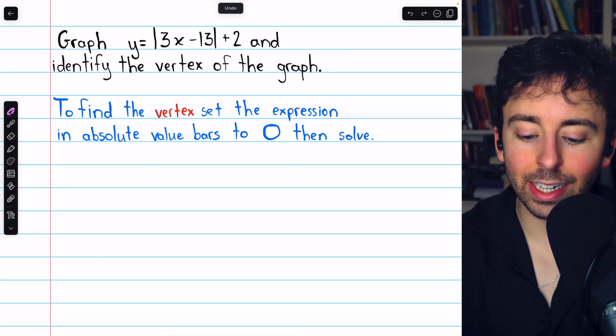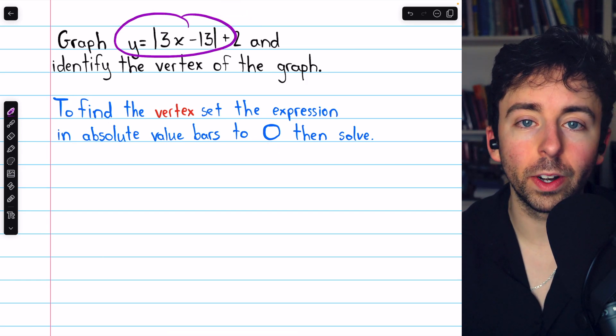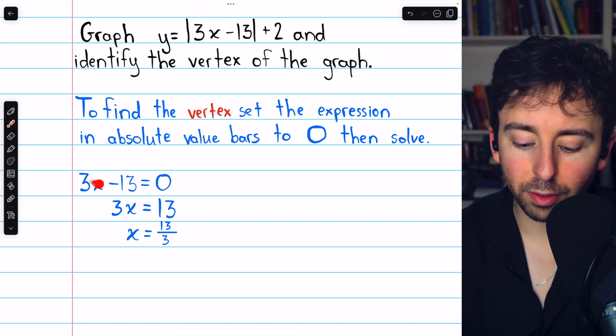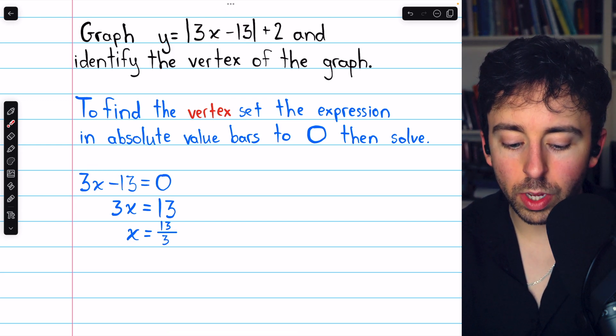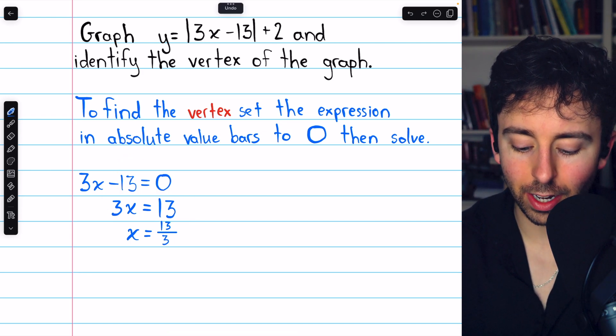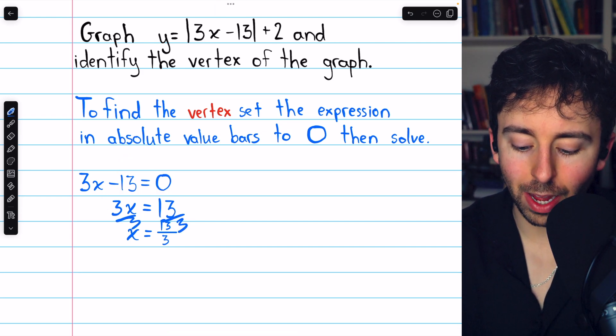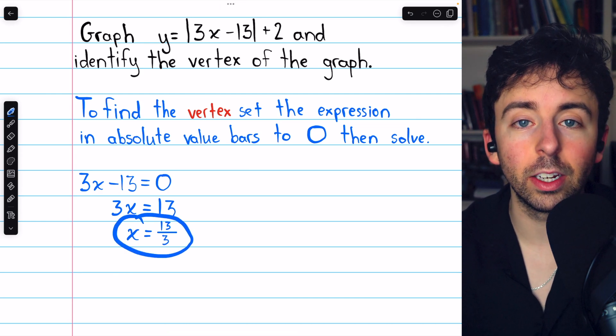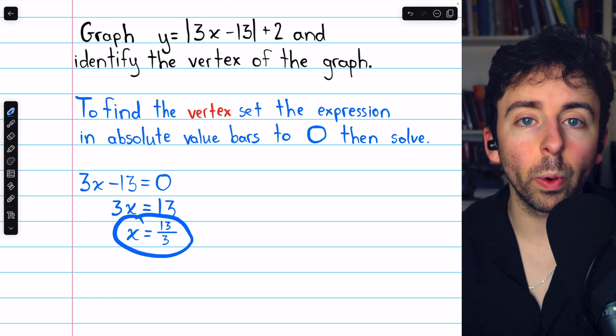Then we can plug that back into this equation to find the y-coordinate of the vertex. So take what's inside the absolute value bars, 3x - 13, and set it equal to 0. We then add 13 to both sides, so we have 3x = 13, and then divide both sides by 3 to finish solving for x. So we have x = 13/3. That's the x-coordinate of the vertex.